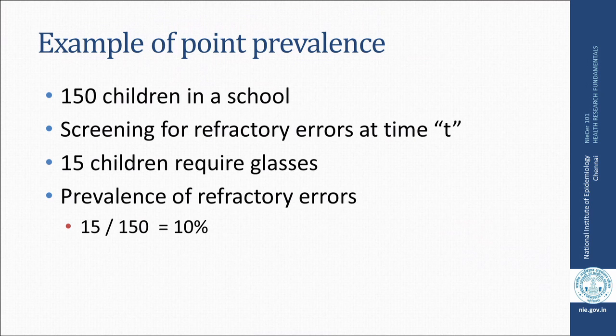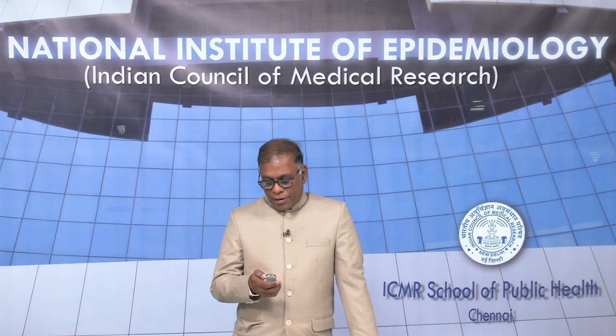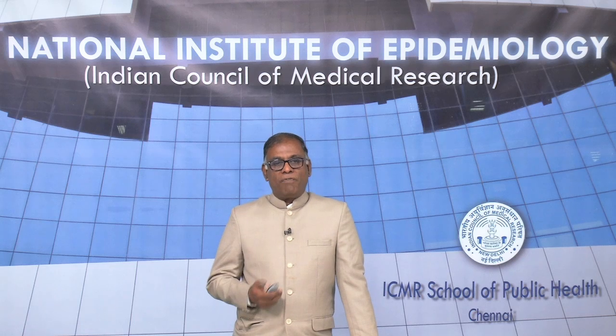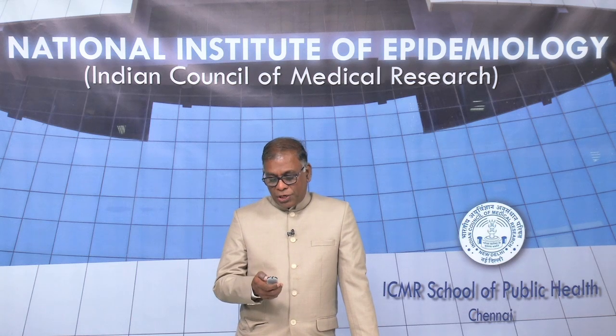N is the population size at time point T. For example, if there are 150 children in a school and you screen them for refractory errors at a particular point of time T, and you find 15 children require glasses, then the prevalence of refractory errors is 15 divided by 150, which equals 0.10, or 10 percent of the school children have refractory errors.